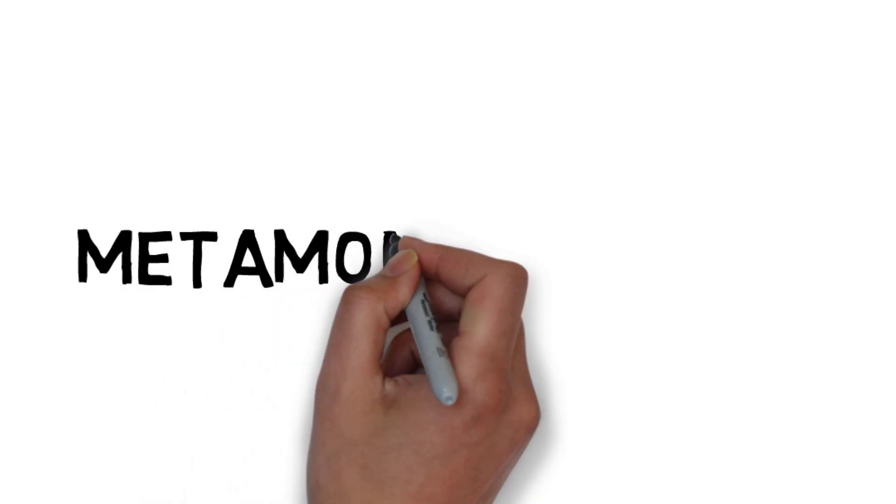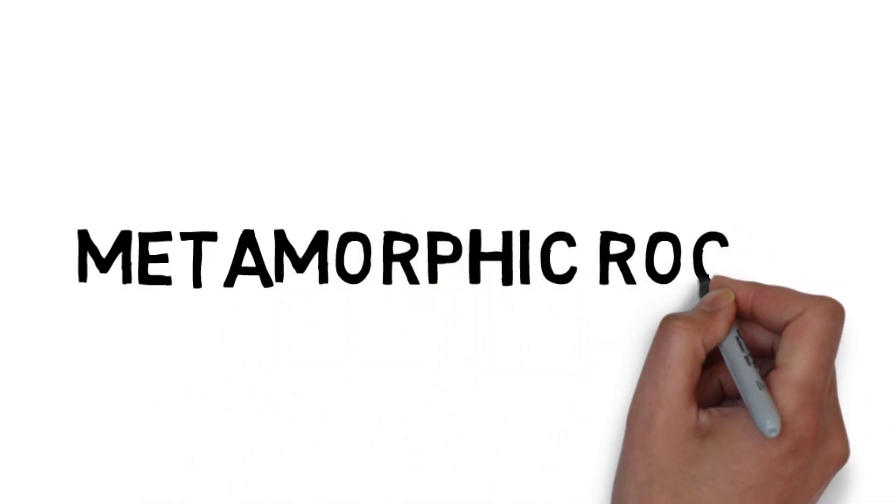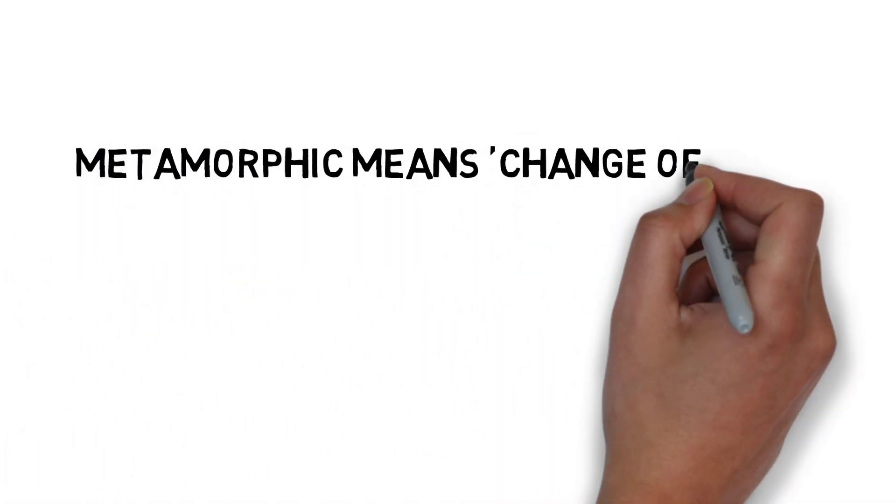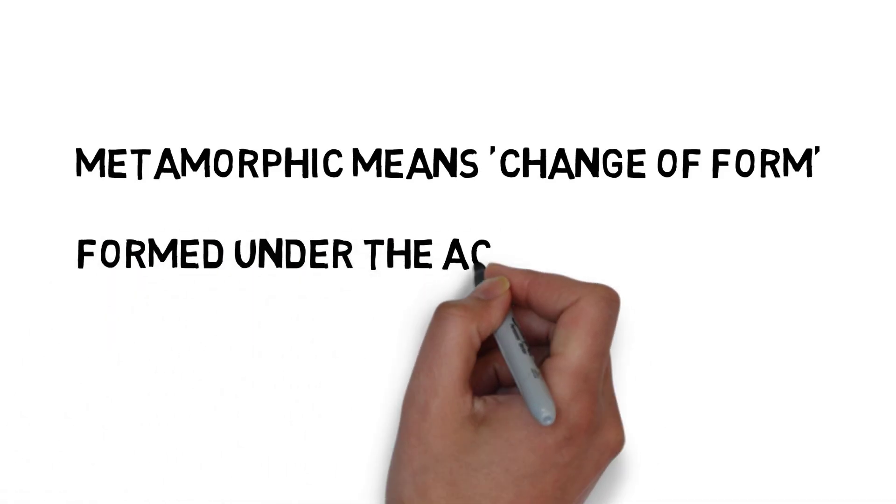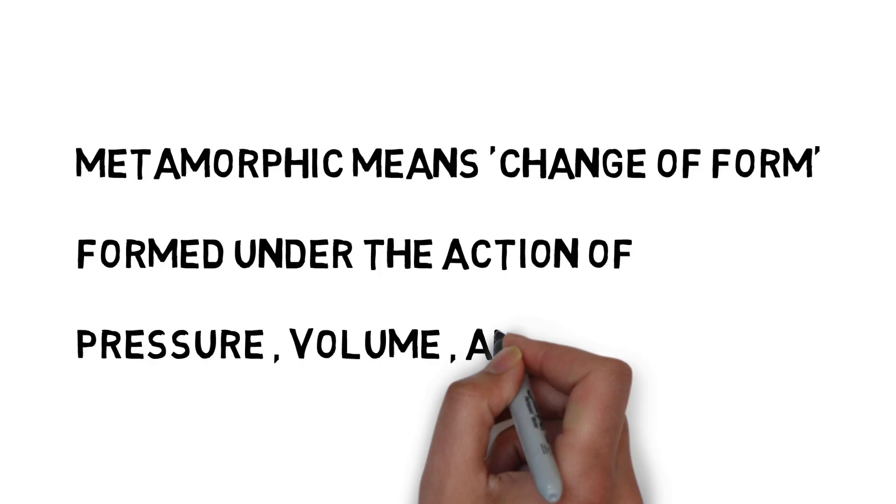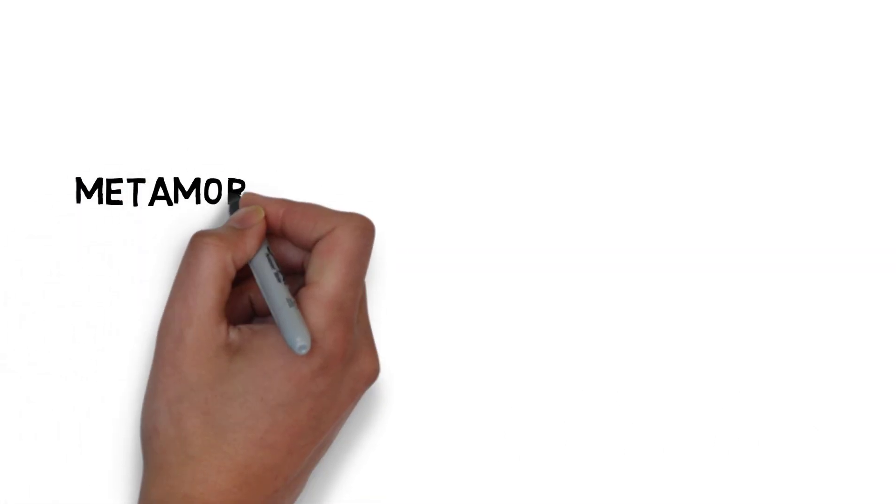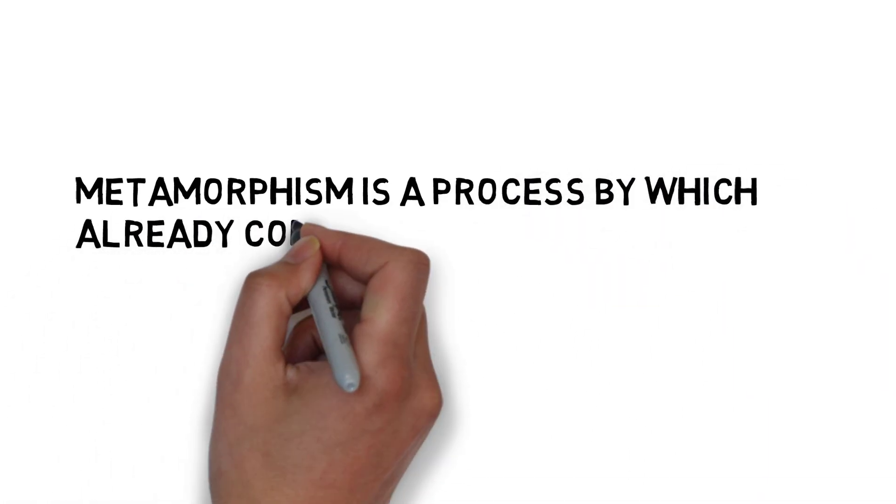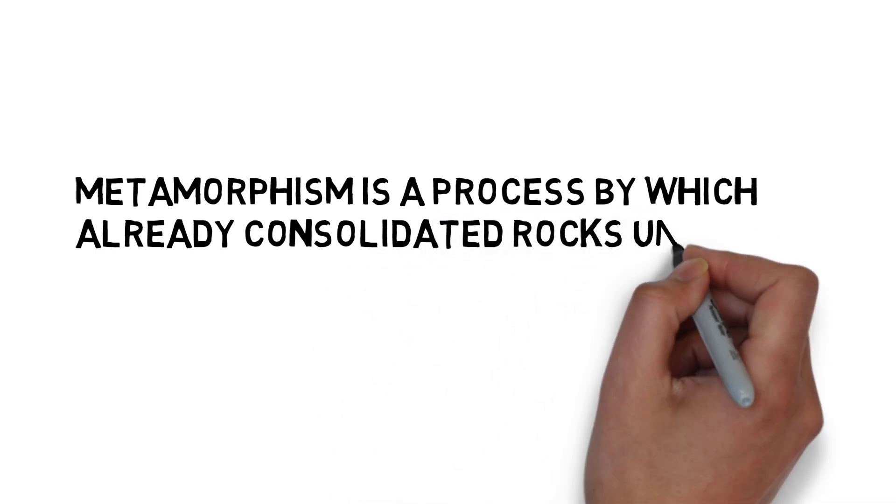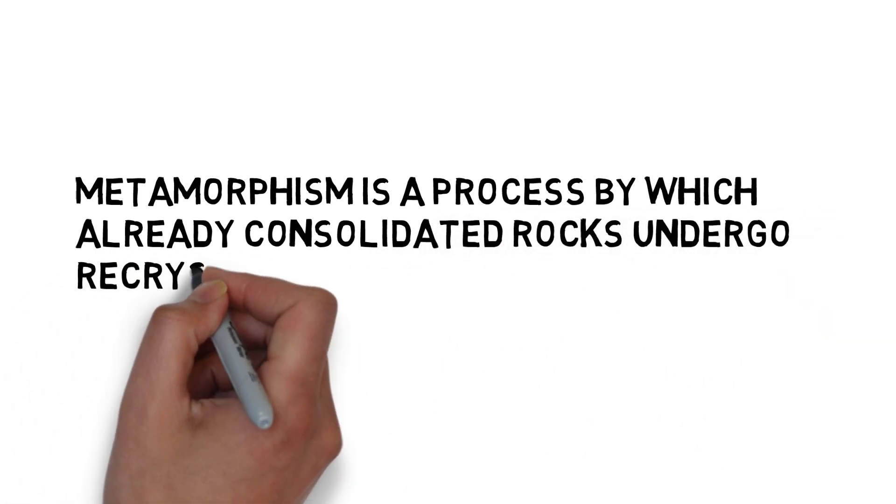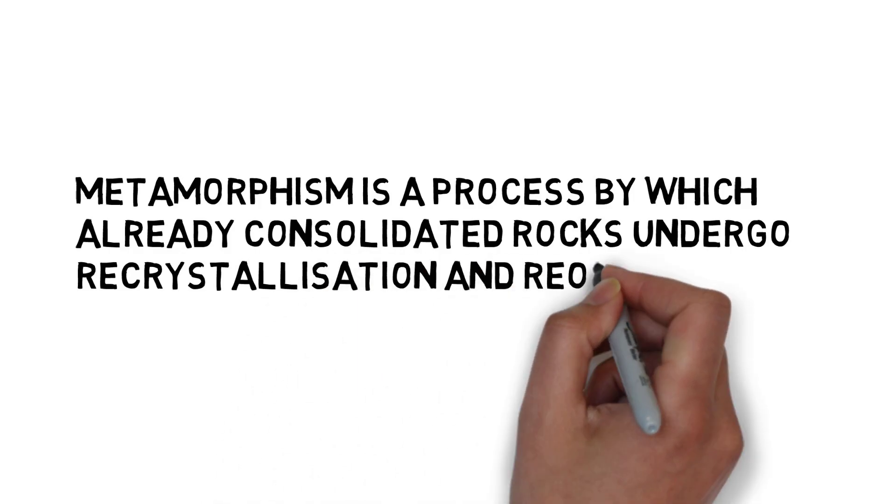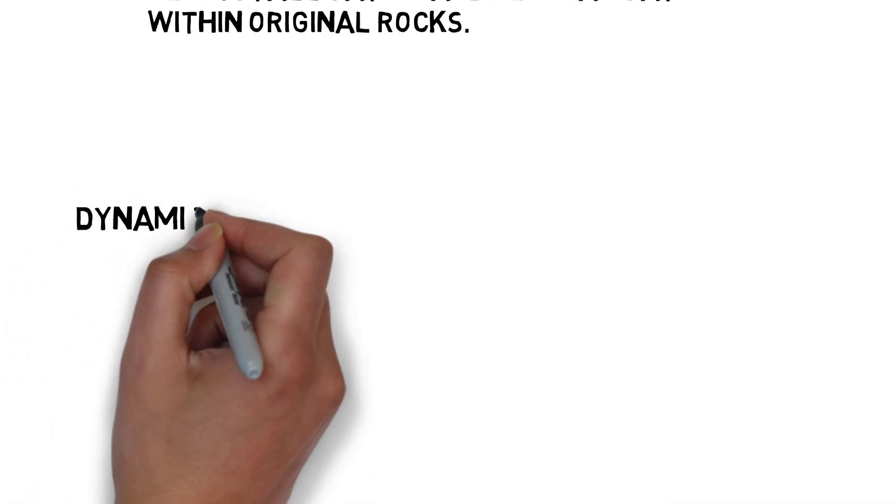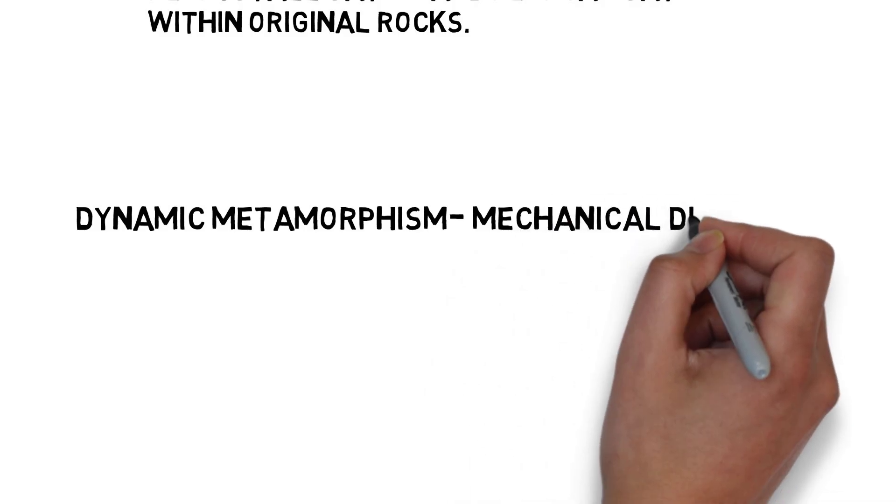Now, let us come to the metamorphic rocks. Metamorphic means change of form, formed under the action of pressure, volume, and temperature. Metamorphism is a process by which already consolidated rocks undergo recrystallization and reorganization. There are different kinds of metamorphism. First, dynamic metamorphism. It is mechanical disruption and reorganization without any appreciable chemical change, which means that there is no such major chemical change in the rock formation but reorganization without any chemical change.